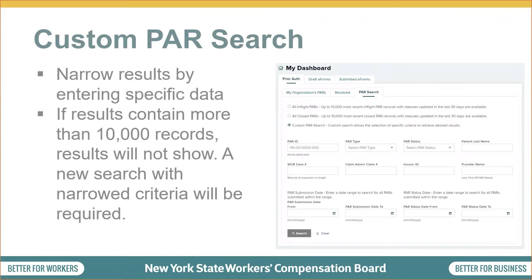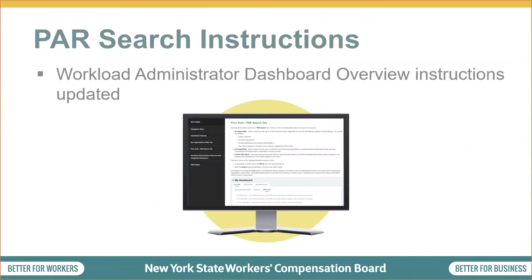If a search result contains over 10,000 records, the system will not show results. You will be prompted to enter more specific search criteria to narrow the results. On the onboard training webpage for payers, instructions for this new PAR search tab have been added to the Workload Administrator Dashboard Overview training webpage. This will provide details on how to use this new PAR search tab and what to expect when viewing results.